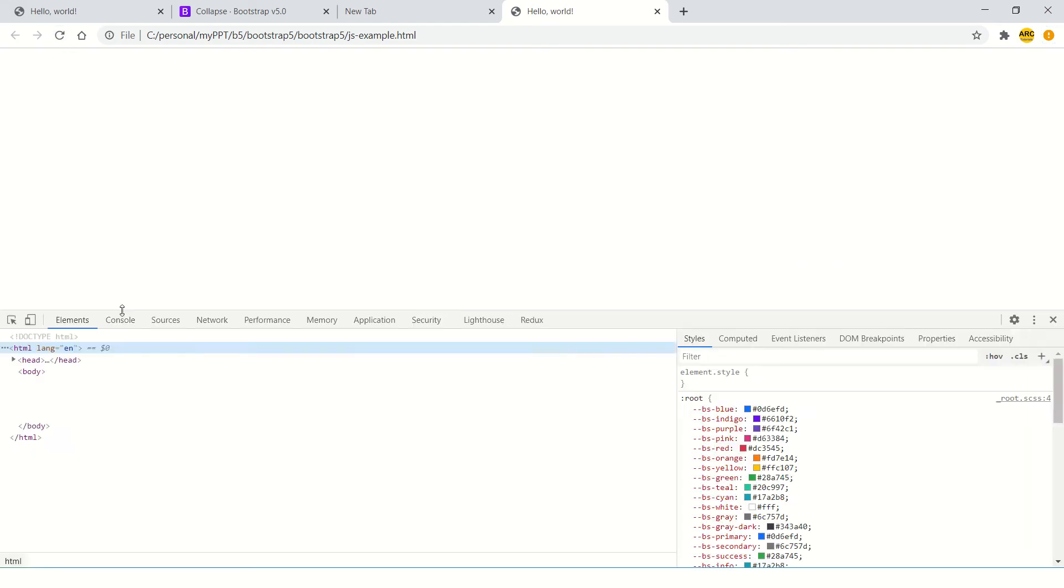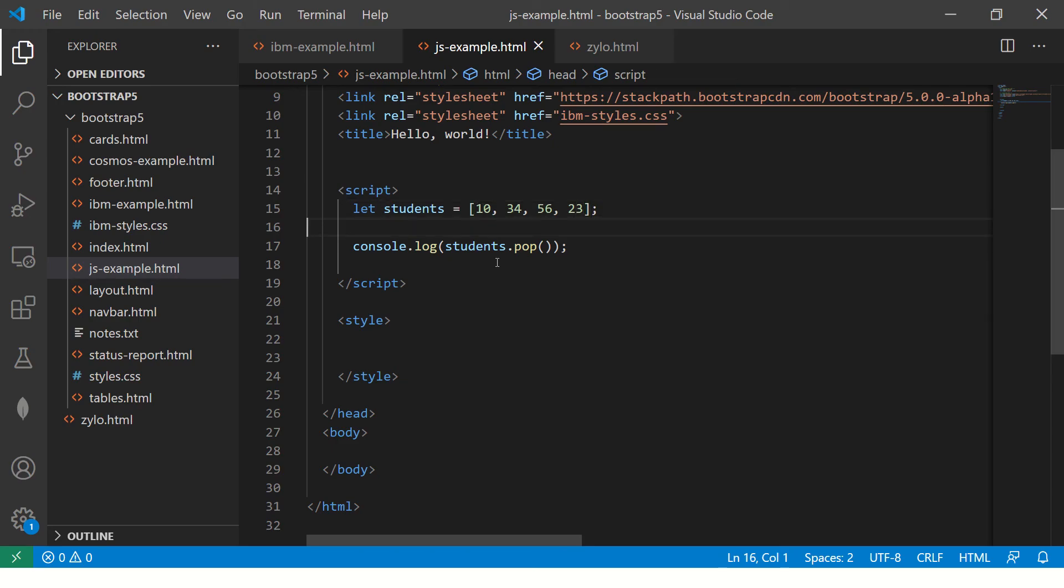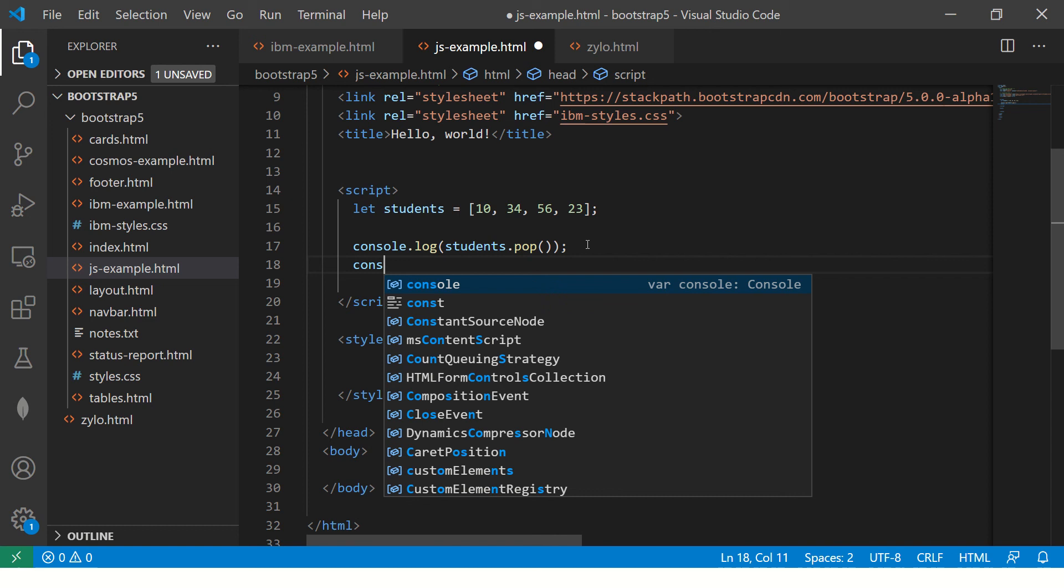So I have it here open, let's refresh, see the console. So see, 23 is removed right, 23 is removed, that's what it says from the original array. But if you see the length of it...